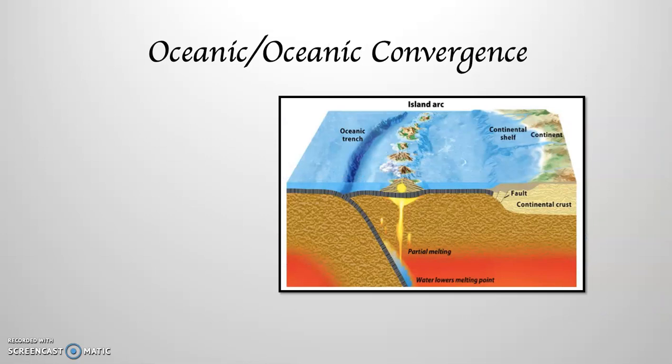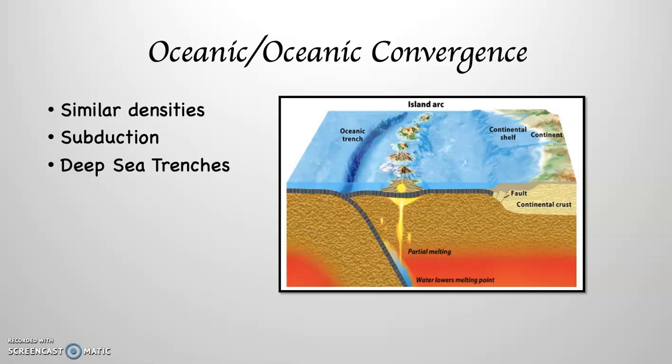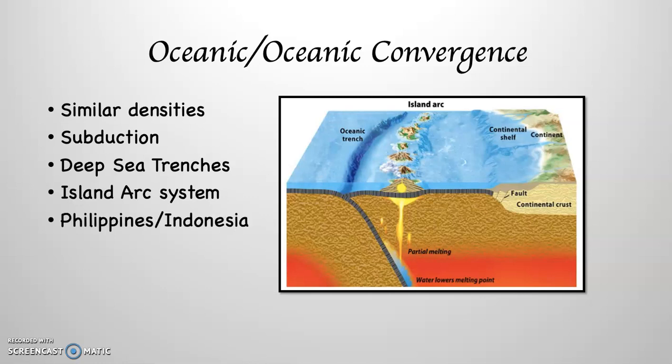When two oceanic plates run into each other — oceanic-oceanic convergence — because they are both of similar densities, they subduct, since they're both heavy and dense. The result of that is both deep-sea oceanic trenches — this is the way the Marianas Trench is formed, the deepest part of the ocean — and what's known as an island arc system, like, for example, the Philippines and Indonesia.